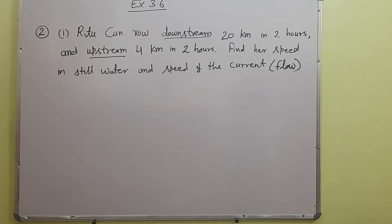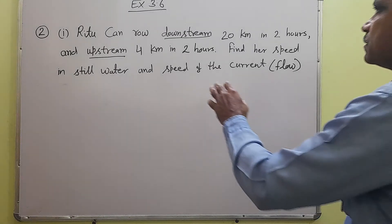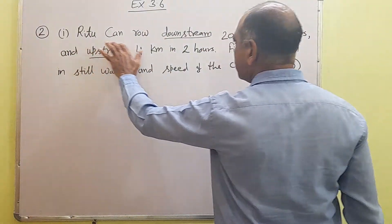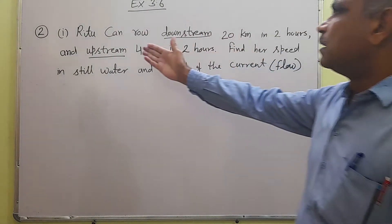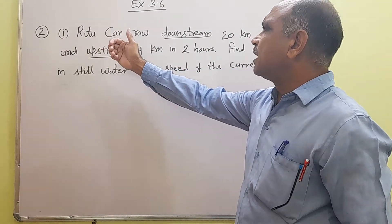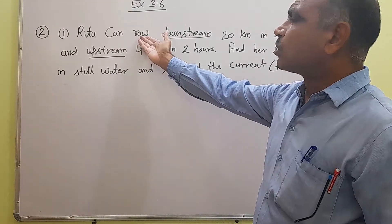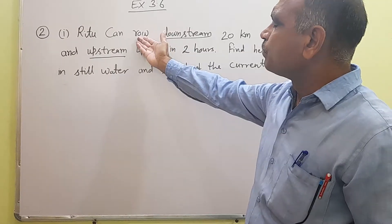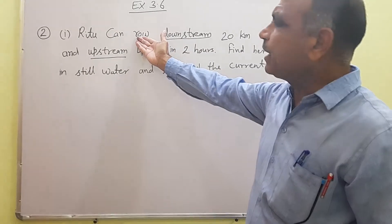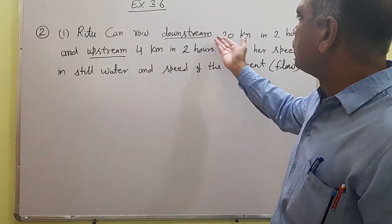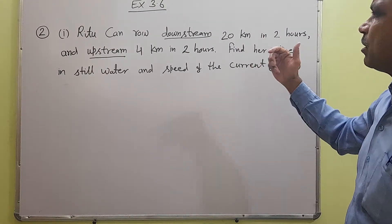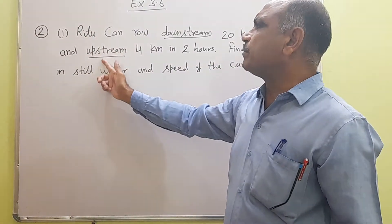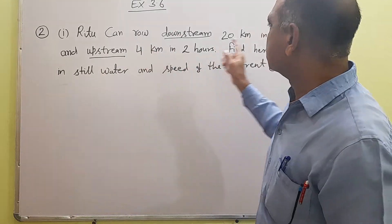Welcome again in math lesson. Exercise number 3.6, Question number 2. This question is a type of word problem. In this question, Ritu is a girl. She is rowing — downstream, where the boat covers 20 kilometers in 2 hours, and upstream when the boat covers 4 kilometers in 2 hours.